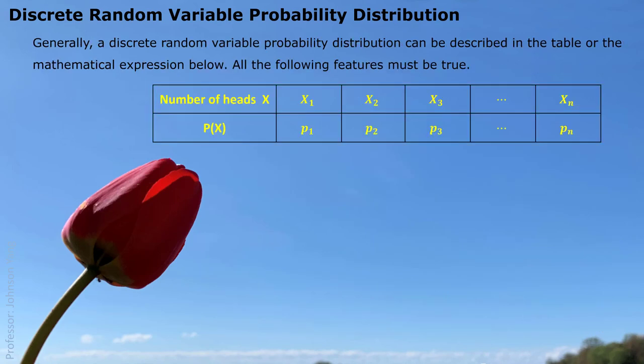This table with all the possible values and the corresponding probabilities is called the probability distribution for random variable x. Generally, if a discrete random variable has possible values x1, x2, x3 until xn, and we also know the corresponding probability for the random variable taking each individual value, we can list them all together in a table. We can also use mathematical expression: the probability x equals xi, or we directly use P(xi), which represents the probability x takes the value xi, with the corresponding probability labeled as pi.